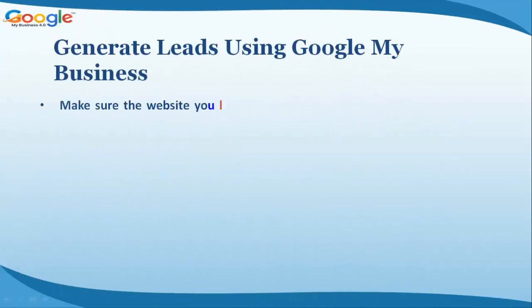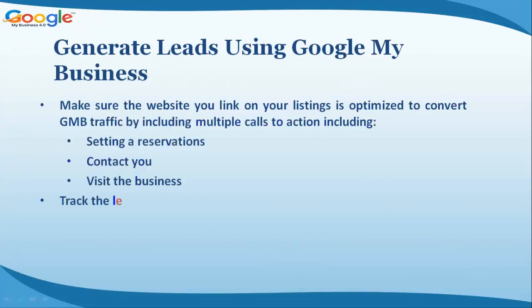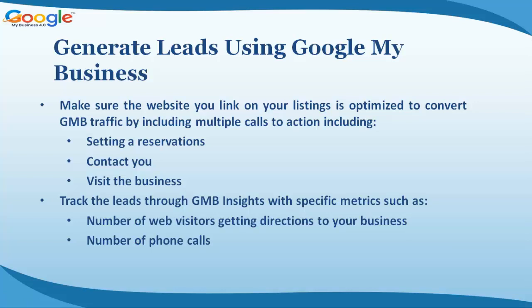Make sure the website you link on your listings is optimized to convert GMB traffic by including multiple calls to action — including setting a reservations contact, a visit to the business, and tracking leads through GMB Insights with specific metrics such as number of web visitors, getting directions to your business, and number of phone calls.